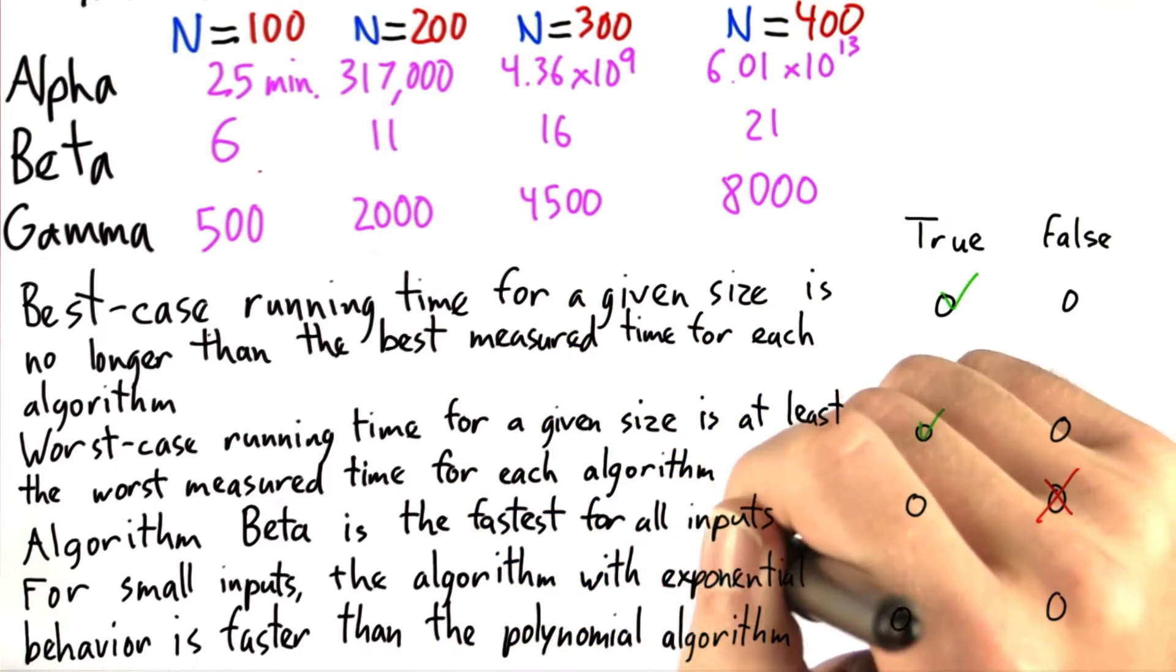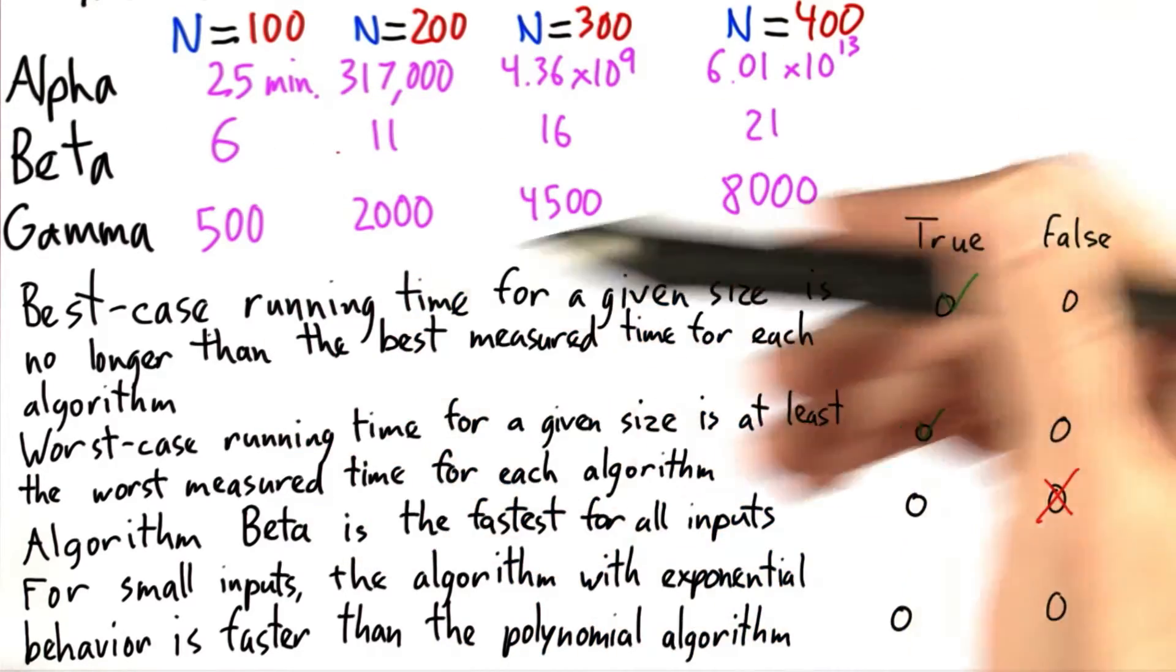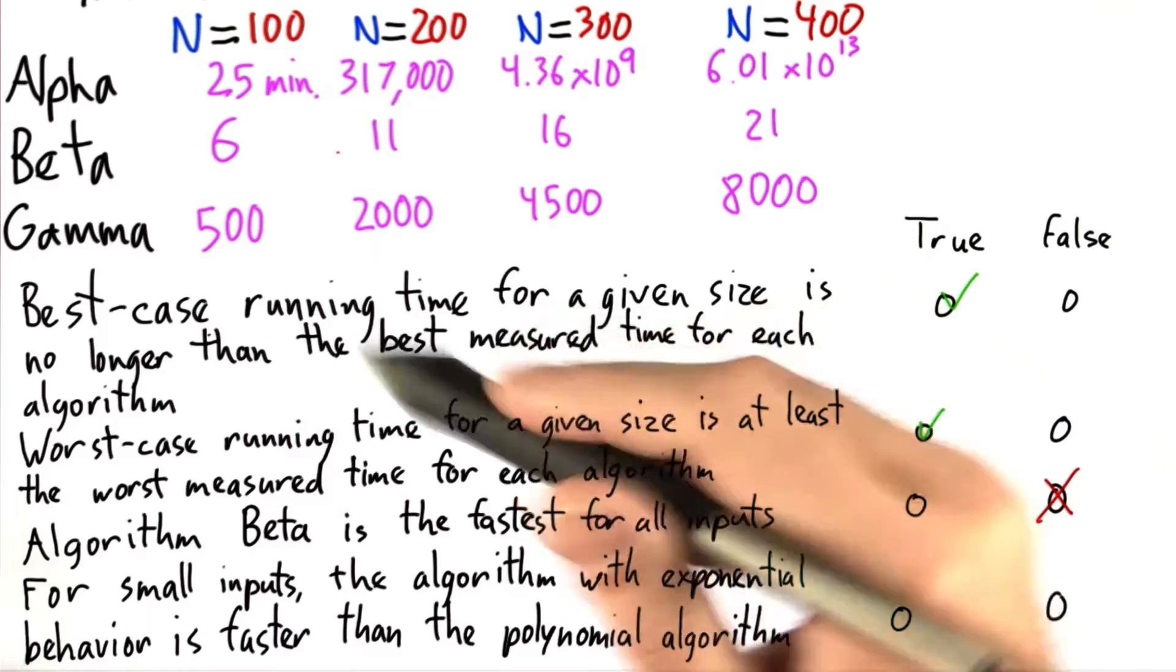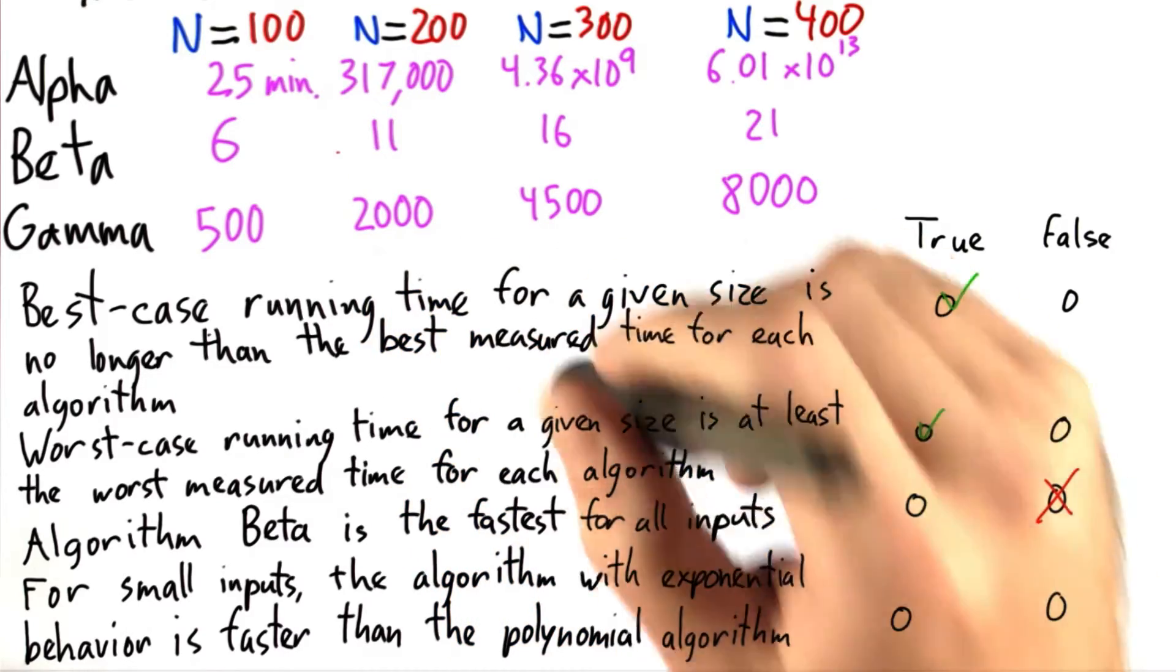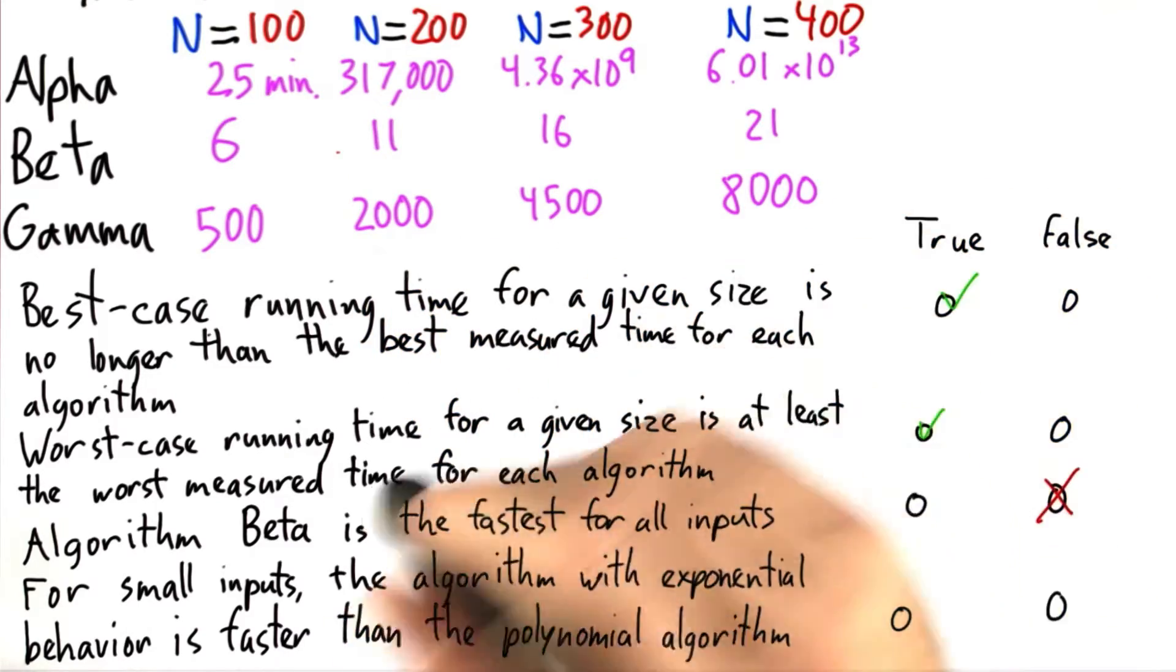We can't say that it's the fastest for all inputs because we haven't tested it on all inputs. That might very well be the case, but in order to say that, we actually would need to test it. And that's not really feasible.